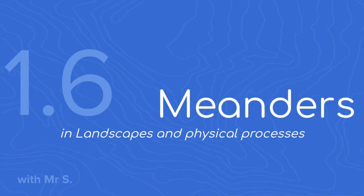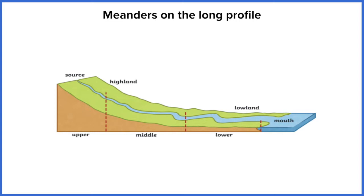Meanders are turns or bends in the river. They're a result of both erosion and deposition processes. On my long profile you can see some examples here — a bend in the river here and here.